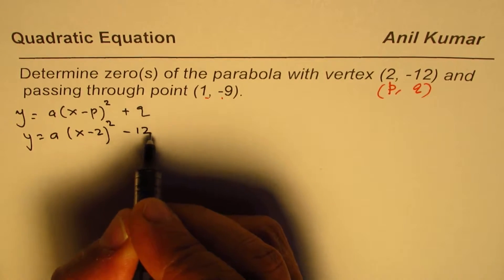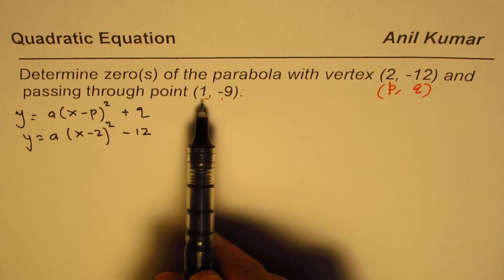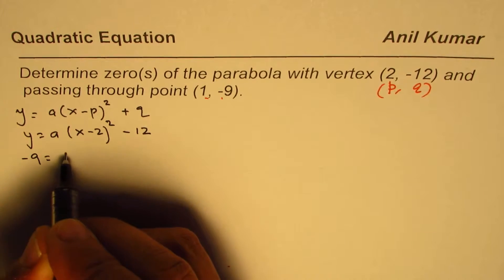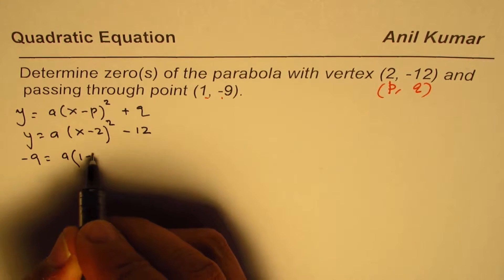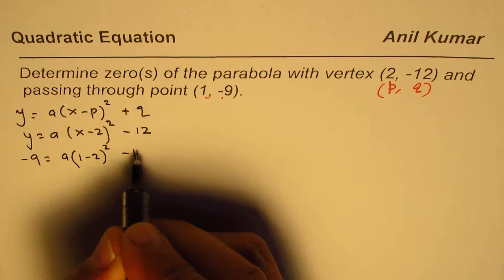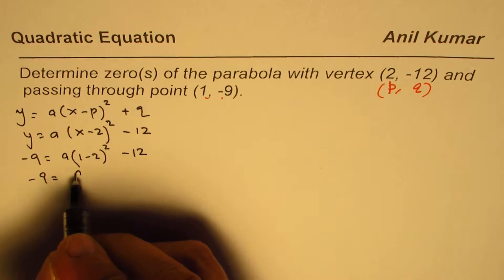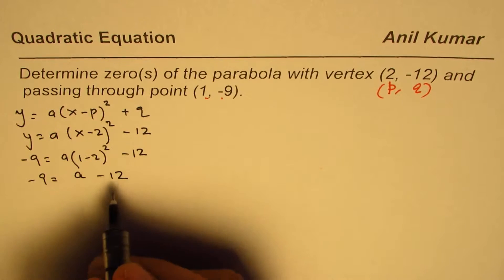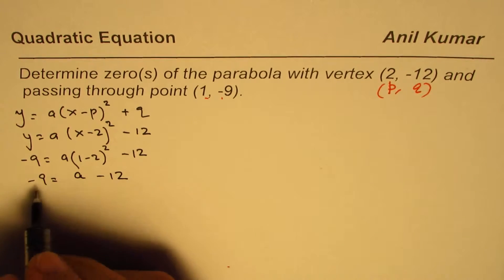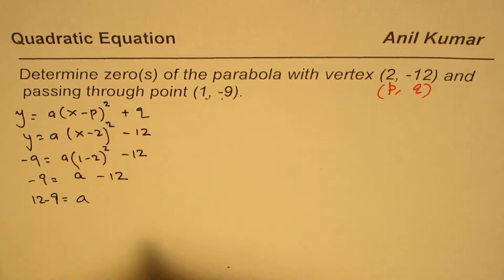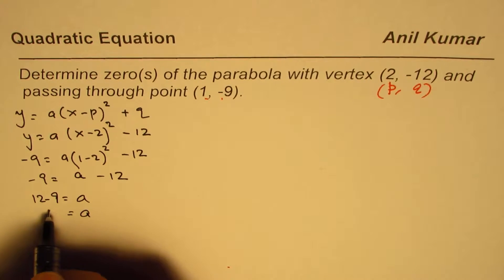To find the value of a, we'll use the point (1, -9). So -9 = a(1 - 2)² - 12. That gives us -9 = a - 12. Bringing 12 to this side, we get 12 - 9 = a, or a = 3.